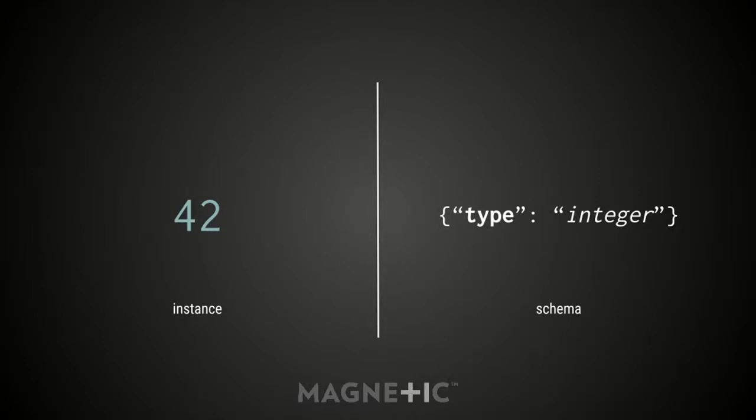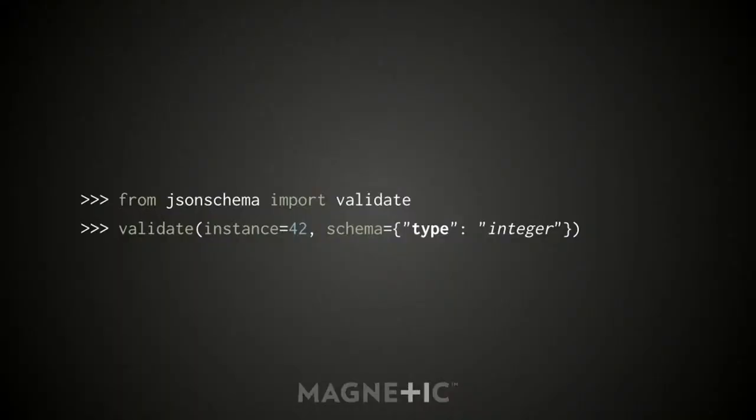A little bit of terminology: on the left we have our instance, which is the piece of data we're trying to validate. On the right is our schema. This is the world's simplest schema — it just says I'm going to validate against anything of type integer. The most straightforward way to do validation is to import the function called validate, pass in your instance and your schema, and nothing happens because the library does nothing when the instance is valid. Since 42 is an integer, everything's happy. You just continue on knowing the data you have is valid.